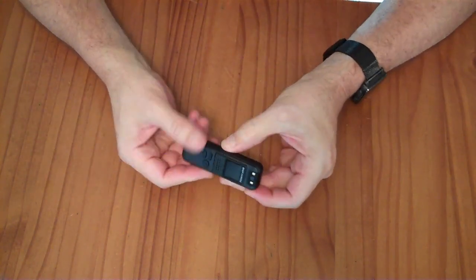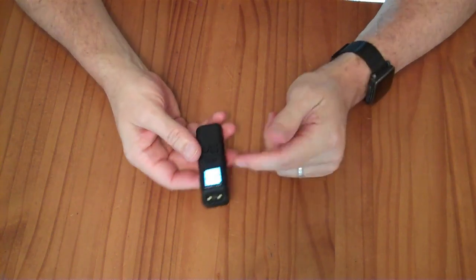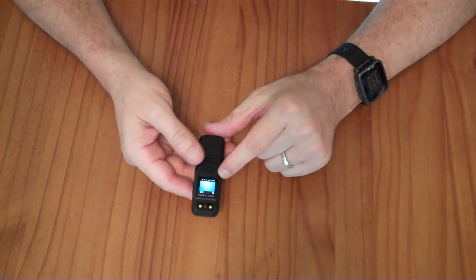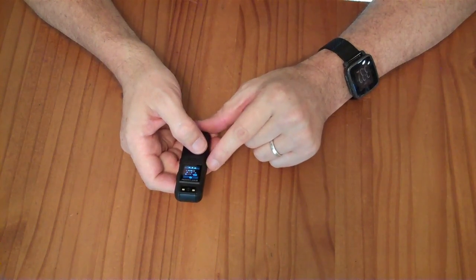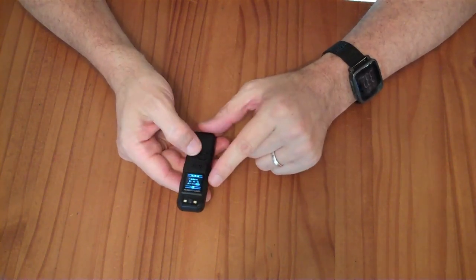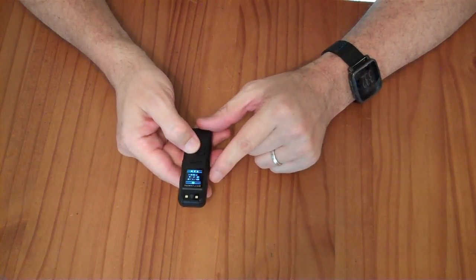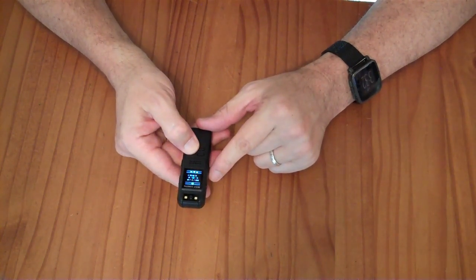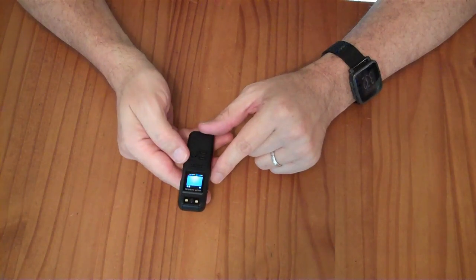We slide this to on to turn this guy on. It boots up. If you want to set the date and time you can push the up and down arrows and then you're able to set the date and time. To move to the next thing you just push this button. When you want to save it you long push and hold the OK button and it goes away.